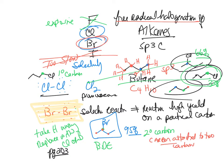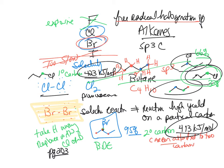On the bond dissociation energy table, you have enthalpies in kilojoules per mole. Bonds to secondary carbons cost 413 kJ/mol to remove that hydrogen. Bonds to primary carbons cost 423 kJ/mol to remove a primary hydrogen. So you're looking at about 10 kJ/mol difference, and that's where you determine your selectivity.